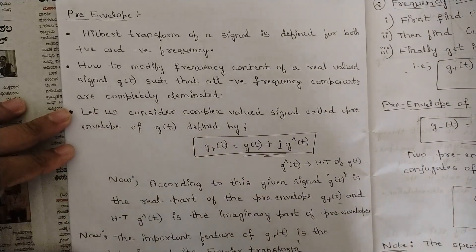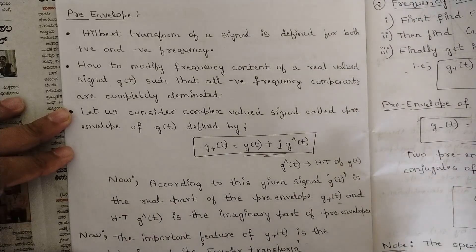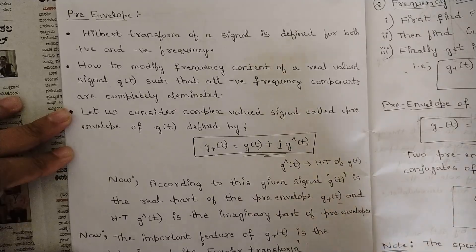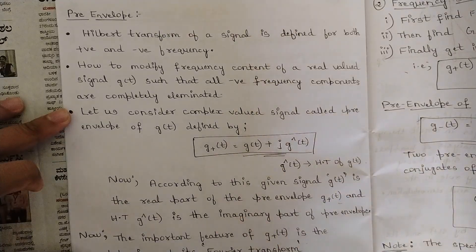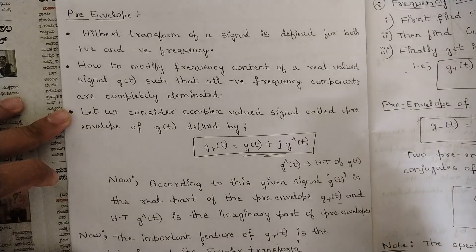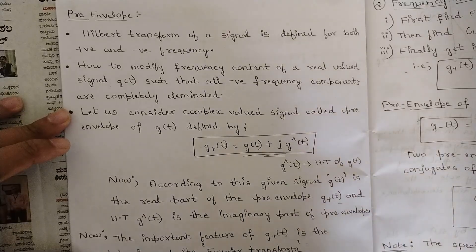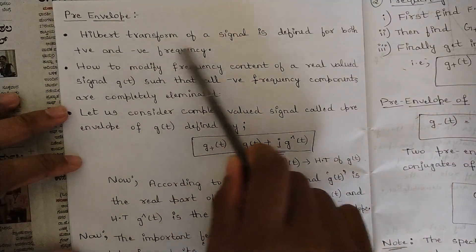We will be continuing with one more concept of digital communication, that is pre-envelope. Before starting pre-envelope, let us summarize what we have studied in the Hilbert transform in the last video. Hilbert transform involves phase reversal or phase selectivity between two signals in order to separate those two signals. Using those Hilbert transform pairs, we need to organize one term called pre-envelope.